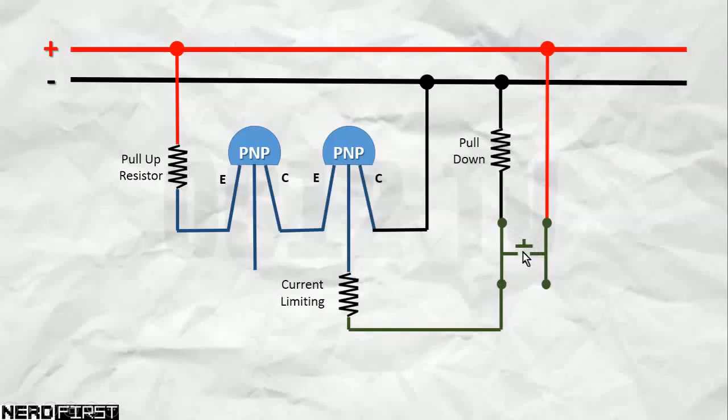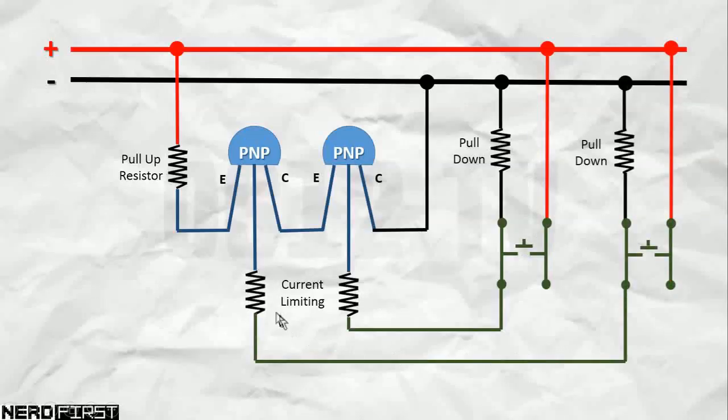When the switch is closed, the high state comes in. It overrides that pull down, and as a result, your base goes high. Basically, repeat the same idea for the other base, and that basically represents our full transistor setup.